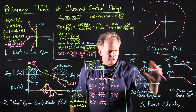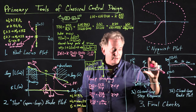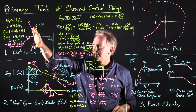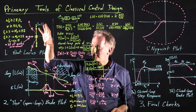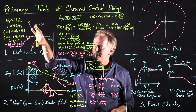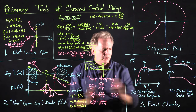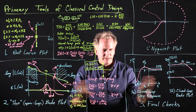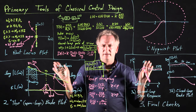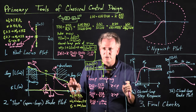You start off with the specifications on the problem, determine how to get stability and get in the ballpark, then do most of your work iterating between the open-loop Bode plot design and the final checks. That's how you do the process of classical control design.